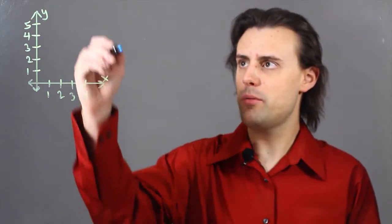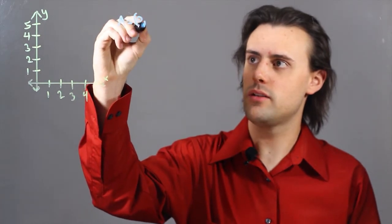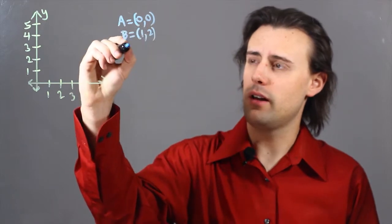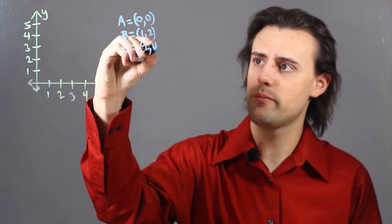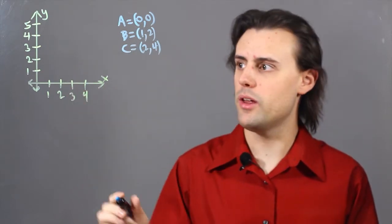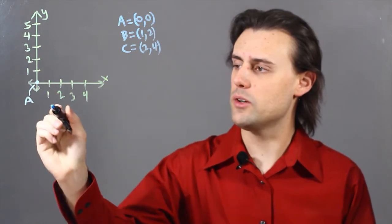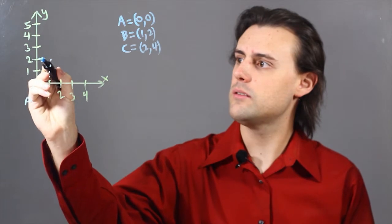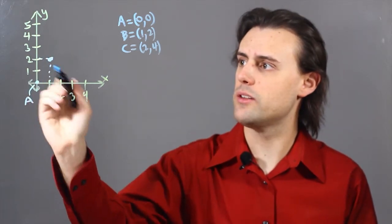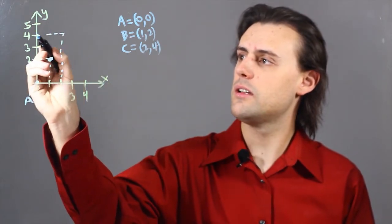So, if we're given three points, let's say point A with coordinates (0, 0), point B with coordinates (1, 2), and point C with coordinates (2, 4), we can look to the xy-plane and plot these points. So, I have point A over here at the origin, and then point B over here, where x is 1 and y is 2, and finally point C located here.